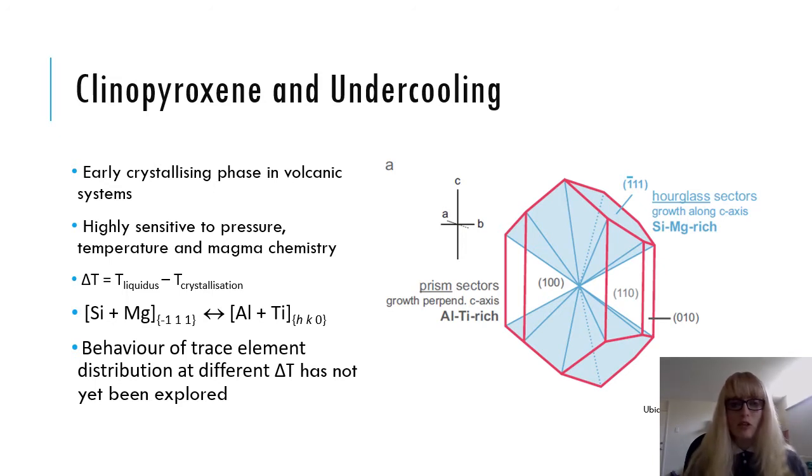Trace elements in sector zoned crystals from Mount Etna appear to also follow this charge balancing substitution mechanism, where highly charged cations, such as the high field strength elements and rare earth elements, are preferentially partitioned into the prism sectors in order to compensate for the charge loss when aluminium substitutes for silica. However, whether this behaviour changes with undercooling is yet to be determined.